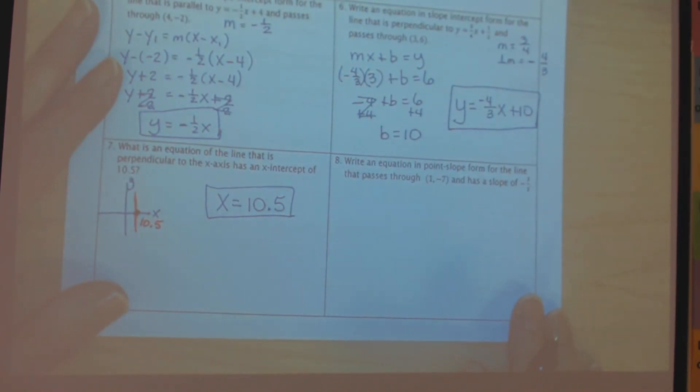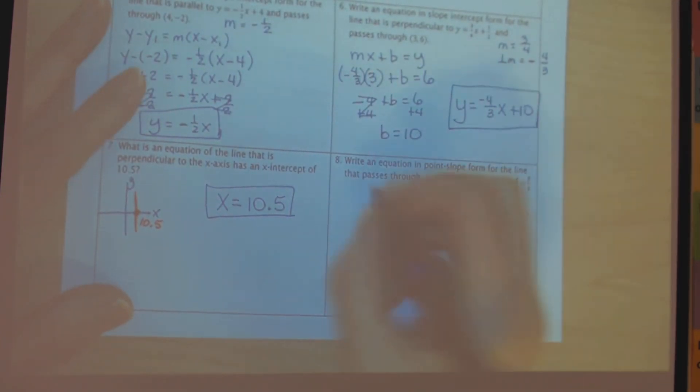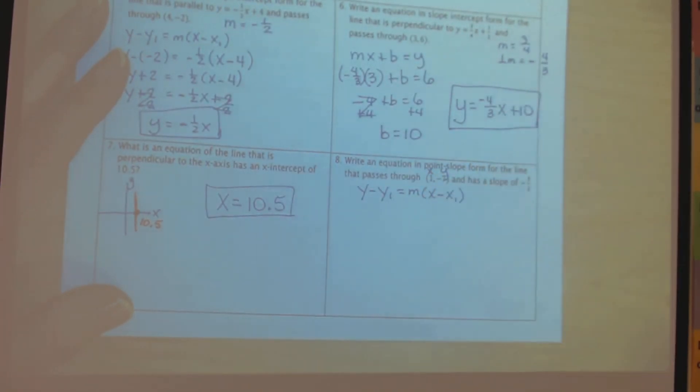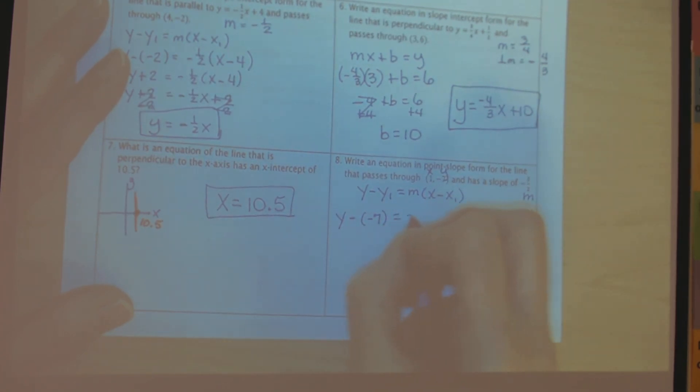Okay, now we're writing an equation in point-slope form. So we definitely want to use y minus y sub 1 equals m times x minus x sub 1. So here's my x sub 1, here's my y sub 1, here's my slope. So now I'm just going to substitute in the values that I have been given.